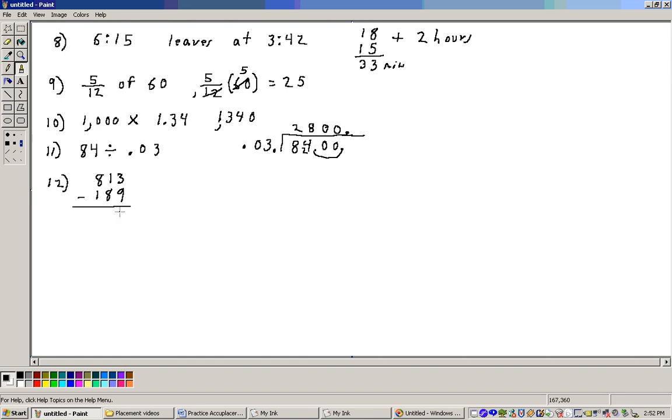So let's see, 13 minus 9 is 4. That knocked this down to a 0. I'm going to borrow one from here. 10 minus 8 is 2, and that now is a 7, and then 7 minus 1 is 6, so 624 is the answer to 12.